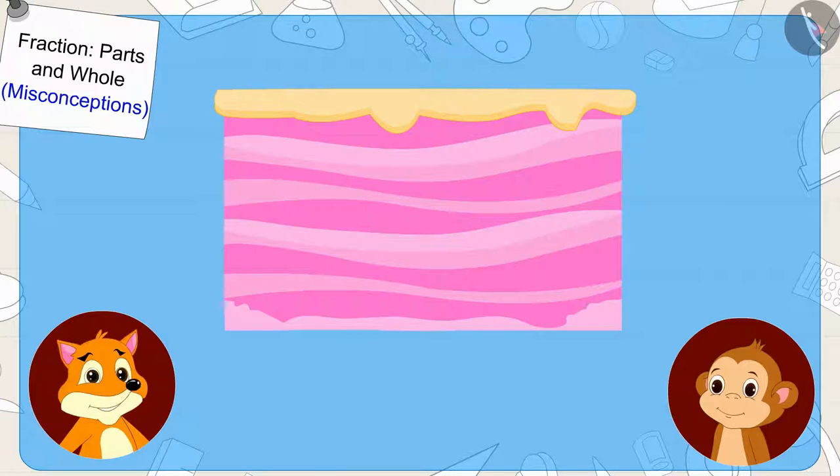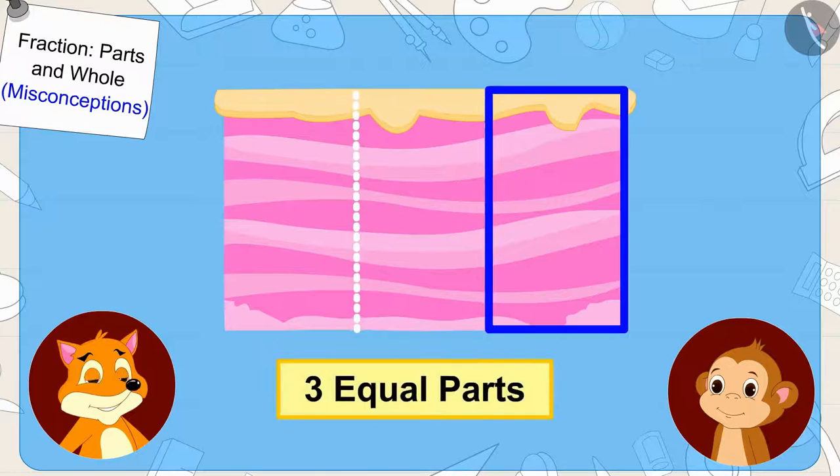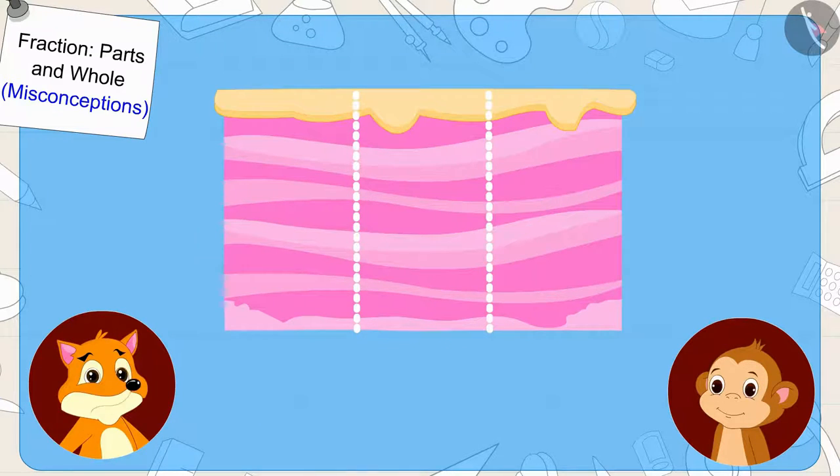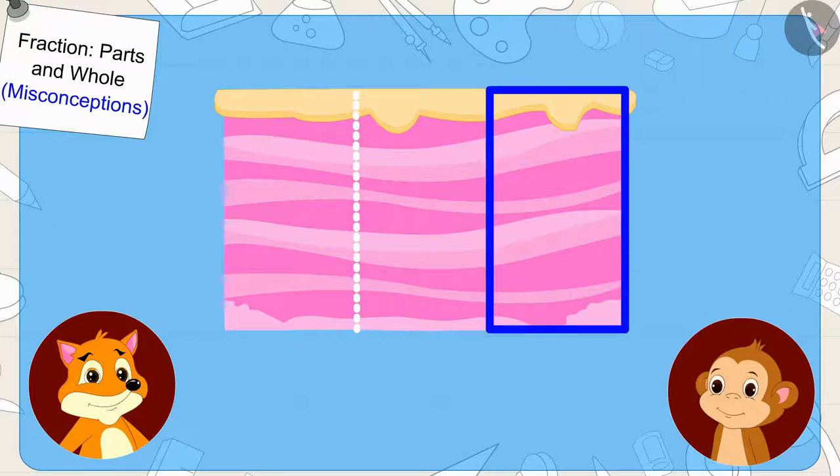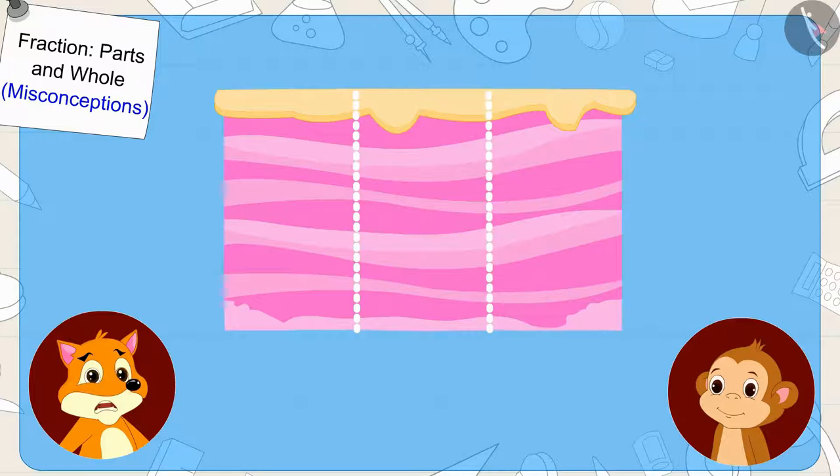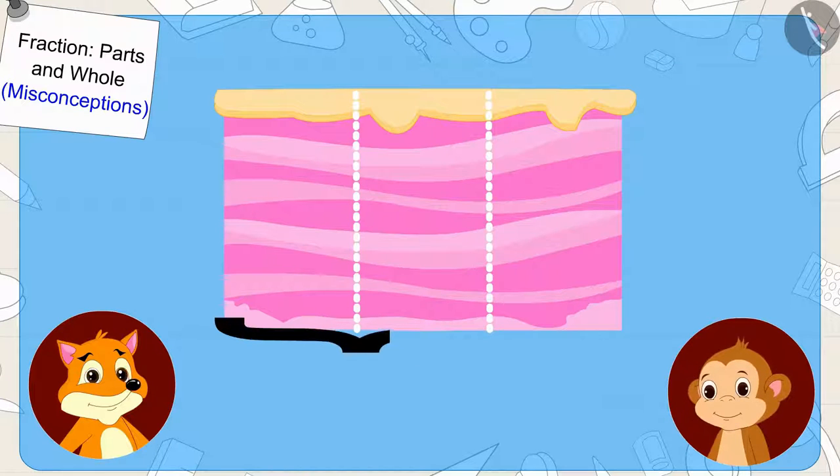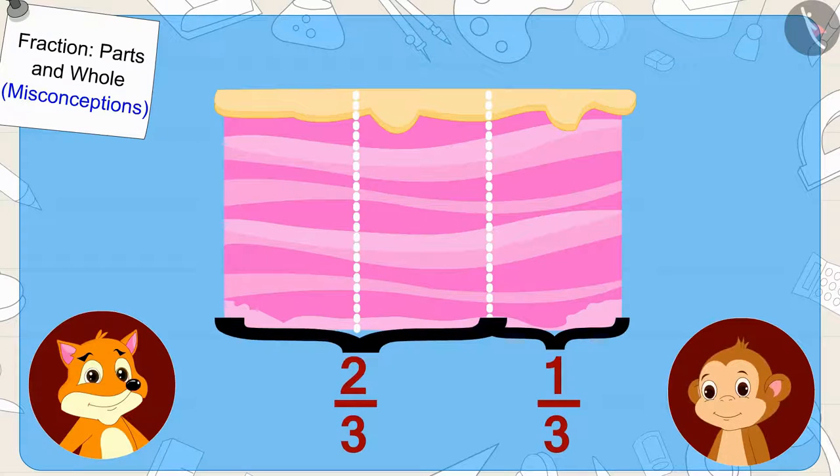The fox agreed. The fox split the cake into three equal parts in this way. The fox told Babban that she would eat two-thirds of the cake and Babban will eat one-third of the cake. When Babban could not understand, the fox wrote it in the form of a fraction.